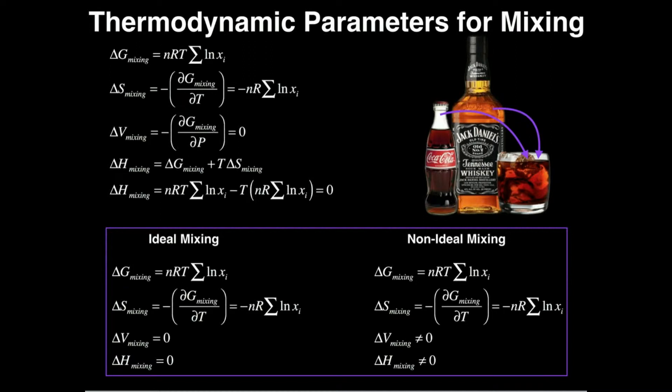We've seen and hinted in the previous videos that we can have two solutions or two liquids and we can mix them together into a solution of some proportion of each of these. So for this example, consider let's make a Jack and Coke. We're going to mix some amount of Jack Daniels in with some amount of Coke to make our mixed drink.